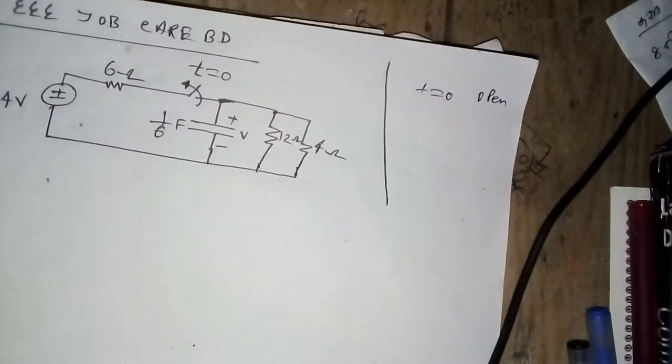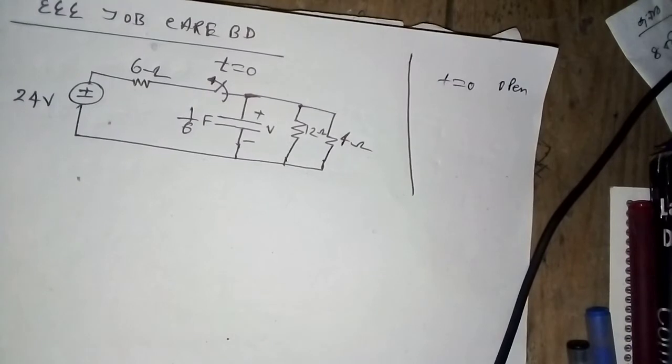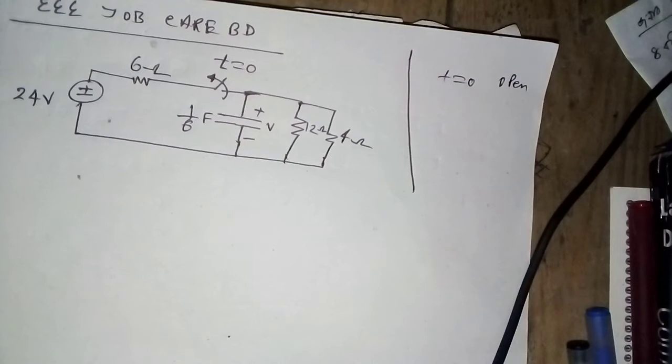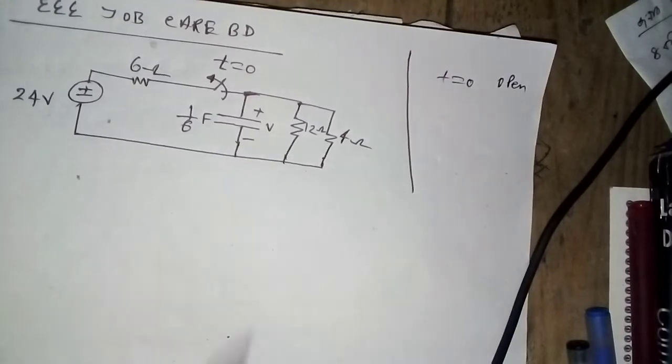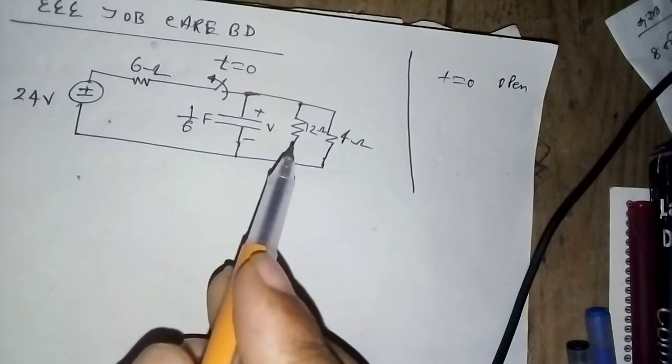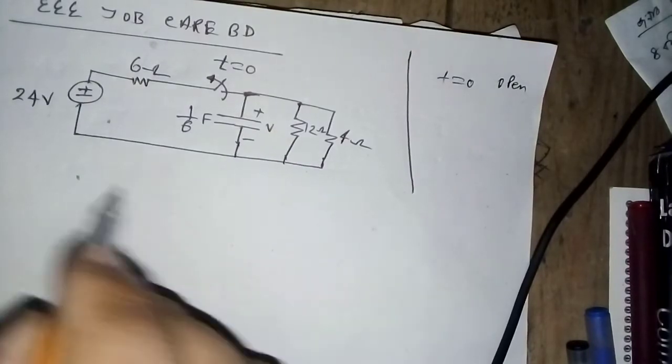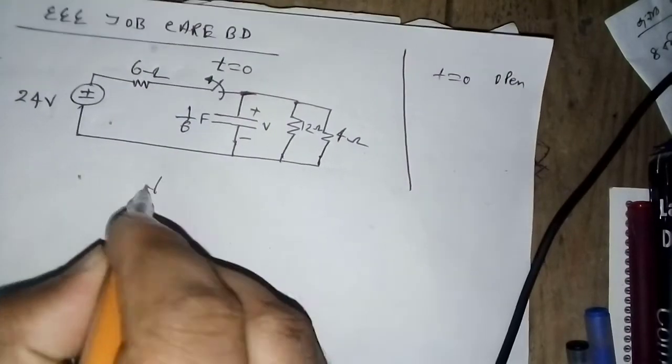The circuit has a switch that is closed for a long time, and at t equal to 0 it opens. Then we need to find out the voltage across the capacitor when time is greater than 0.